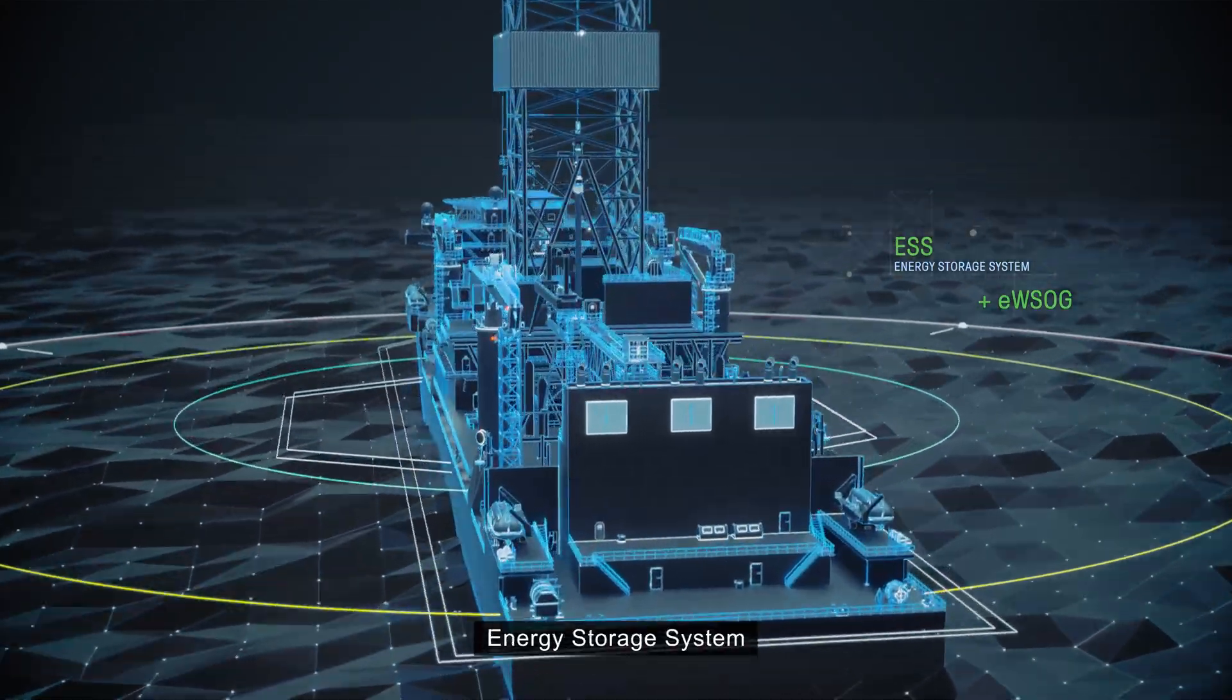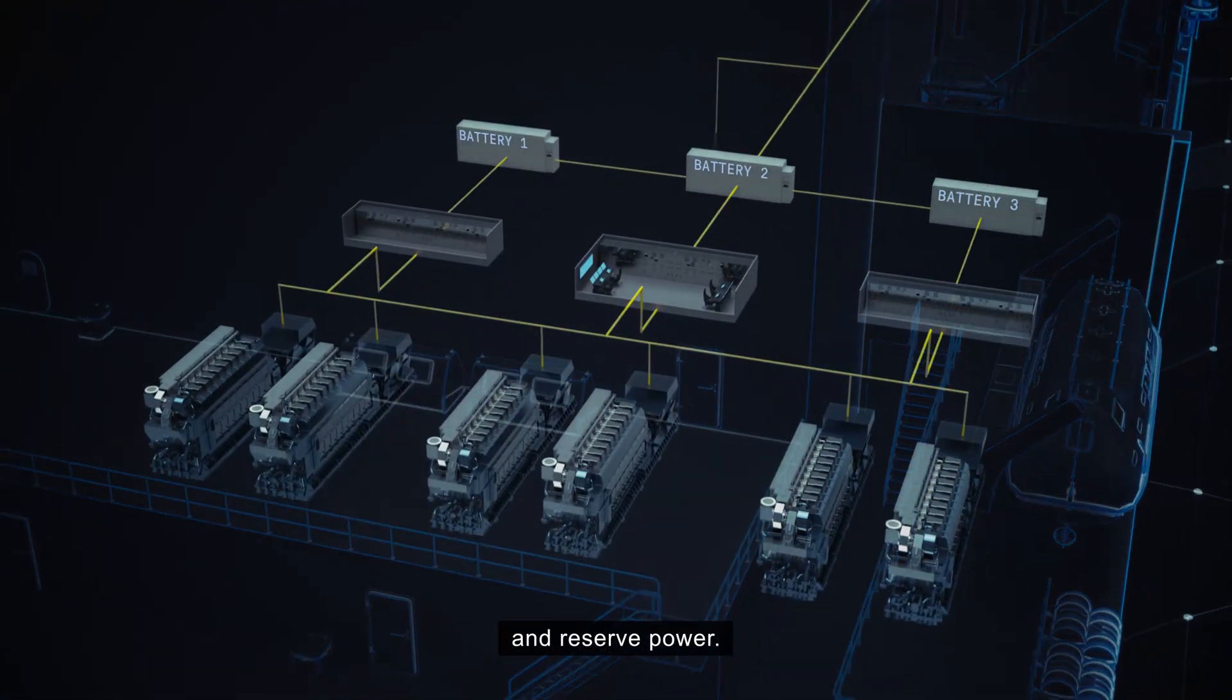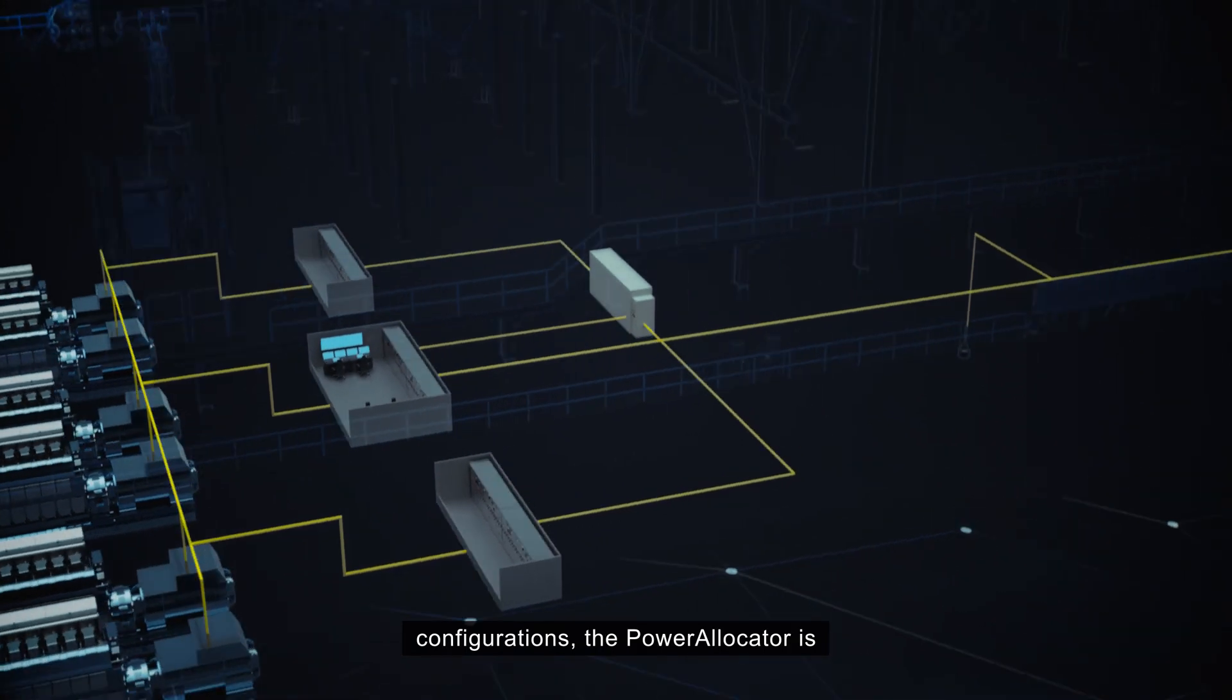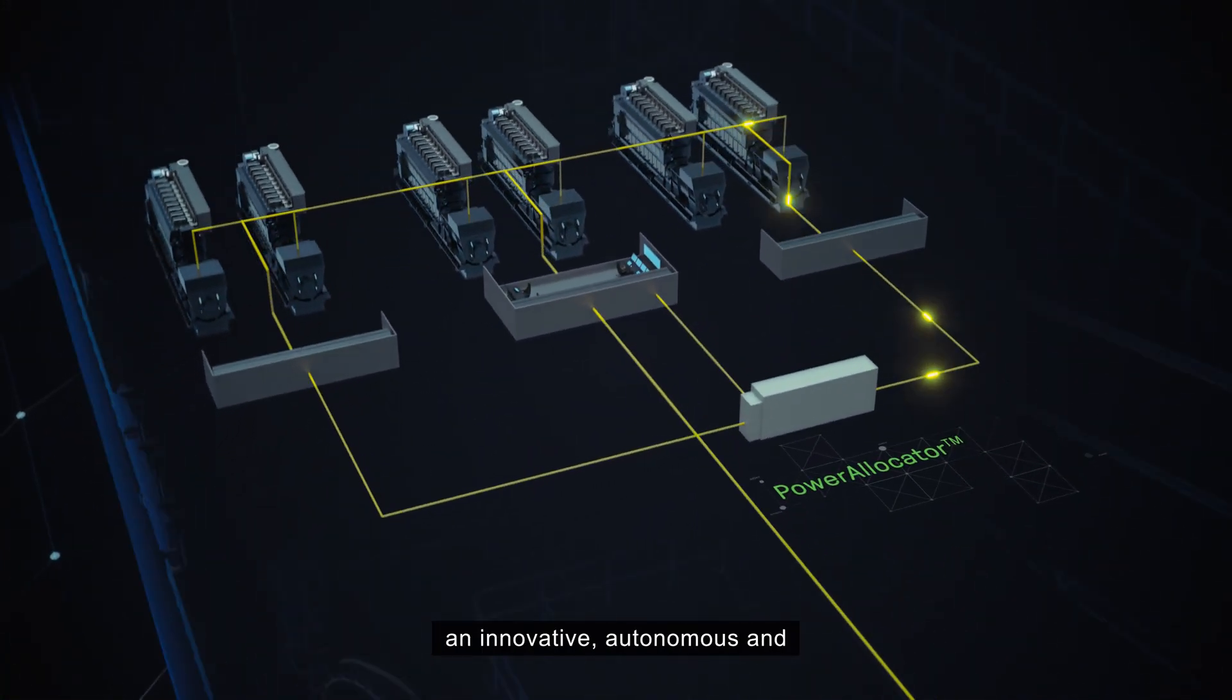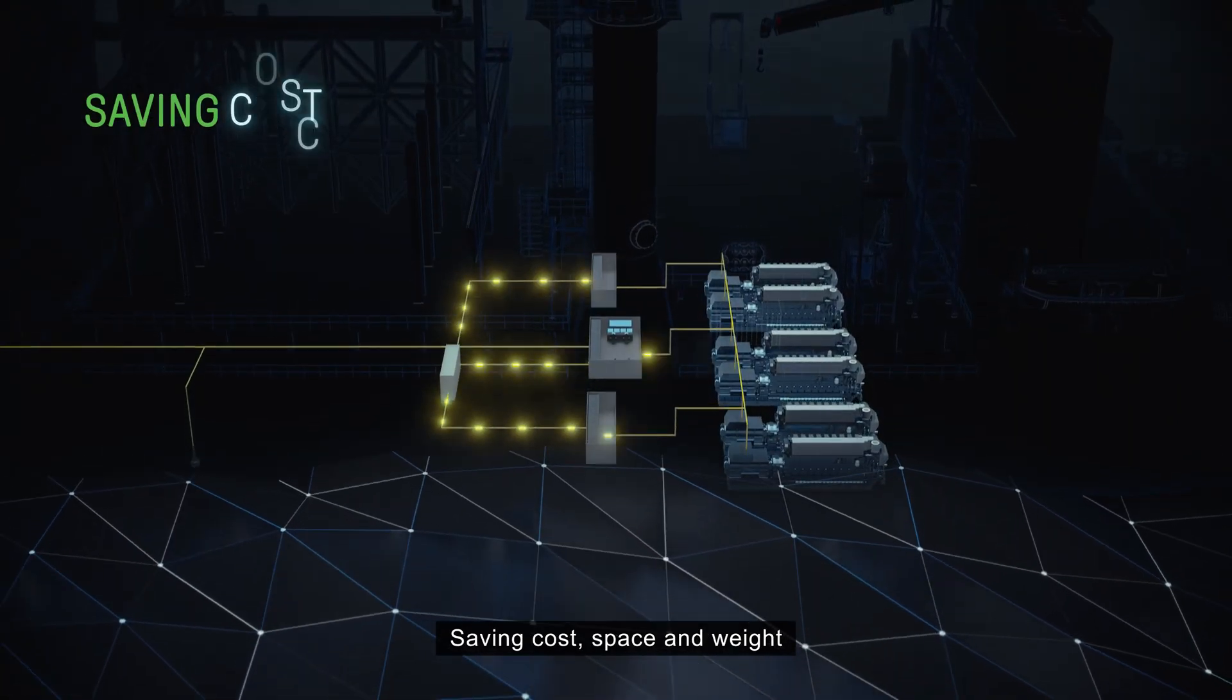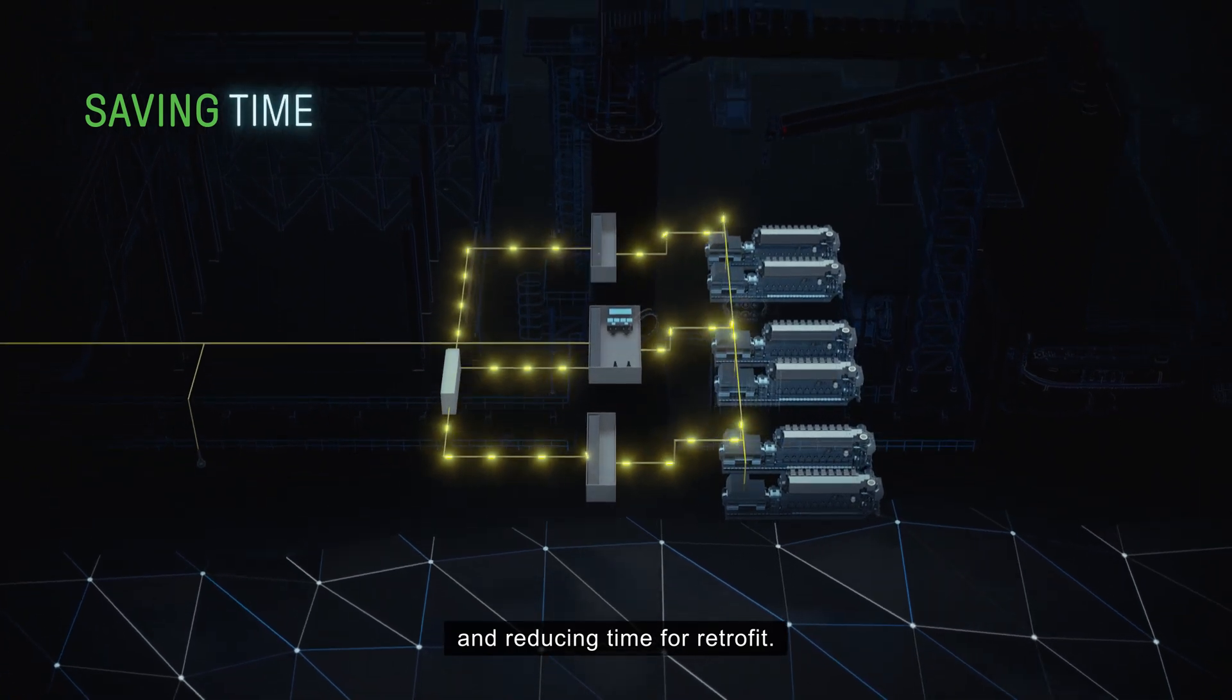Kongsberg Maritime's energy storage system captures energy for peak shaving and reserve power. Unlike conventional multi-battery configurations, the power allocator is an innovative, autonomous and fault-tolerant battery system. Saving cost, space and weight. And reducing time for retrofit.